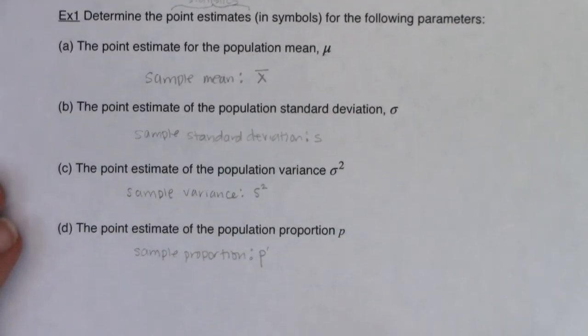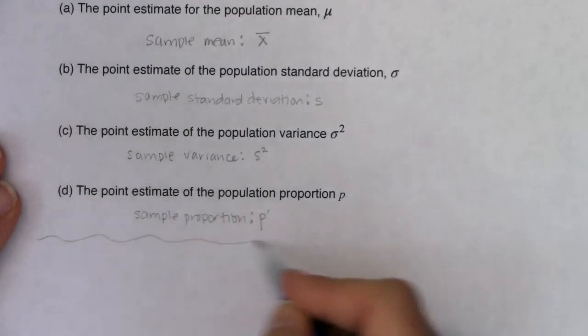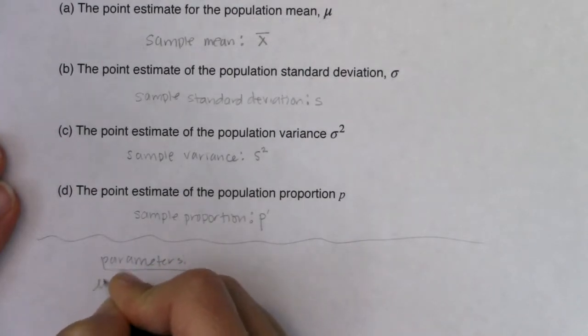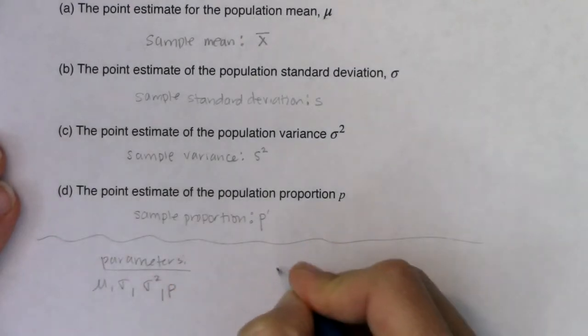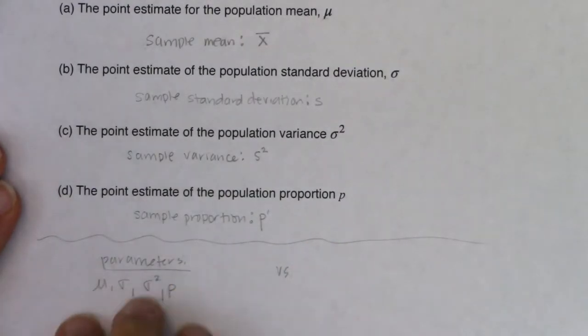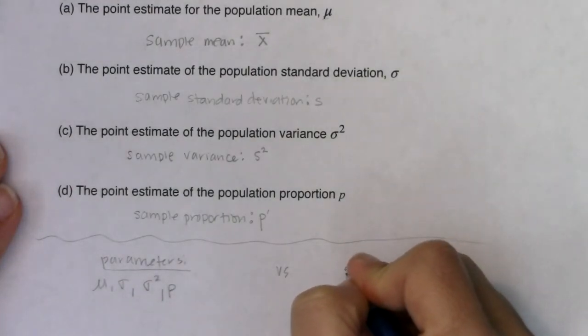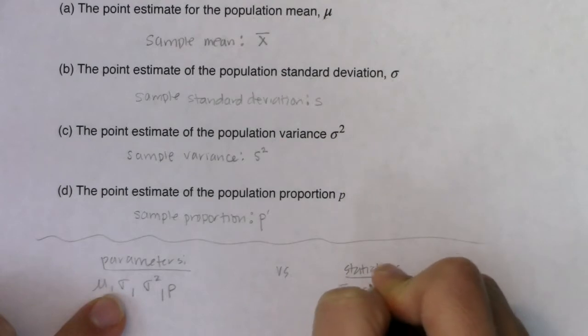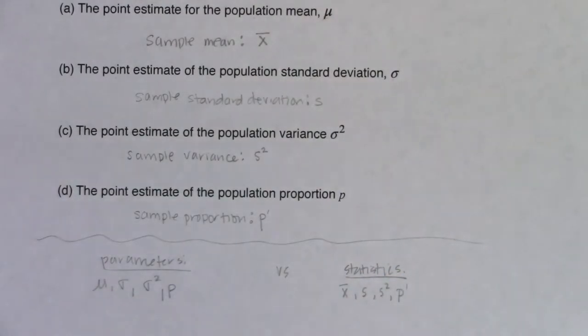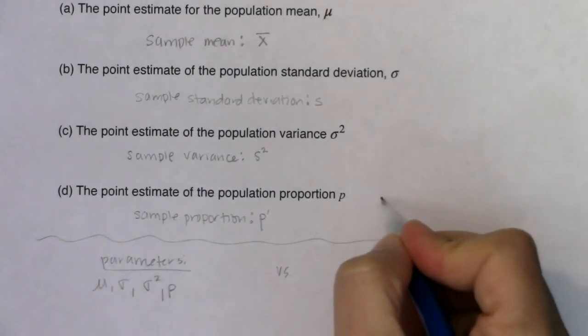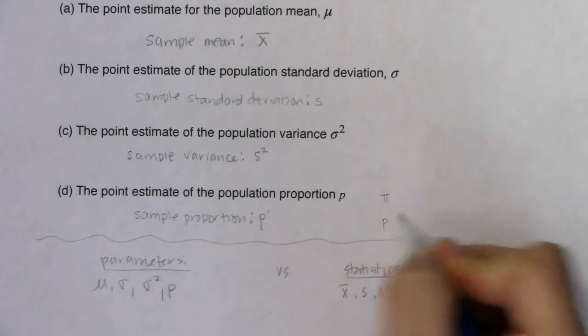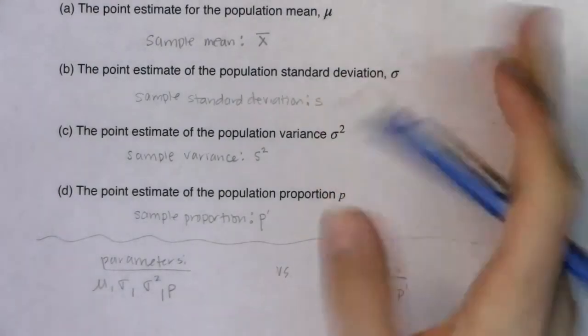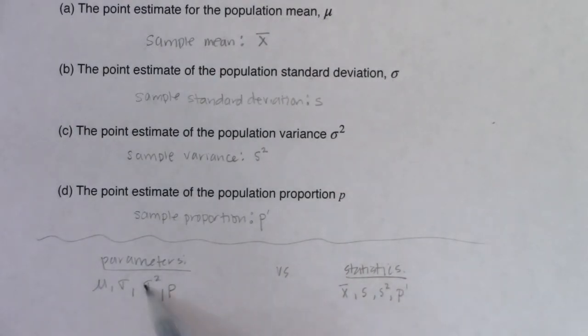Let me write all this out so we're all on the same page. Here are parameters - four of the ones that we're going to deal with. We're going to have the mean, the standard deviation, the variance, and a proportion. Instead of running a census and finding these four numbers, I'm going to select a sample and crunch numbers from my sample, and we call those statistics. They are respectively x̄, s, s², and P′. Most books would have used π here - the Greek letter π - and then our alphabet for P, but we're not doing that in this book.